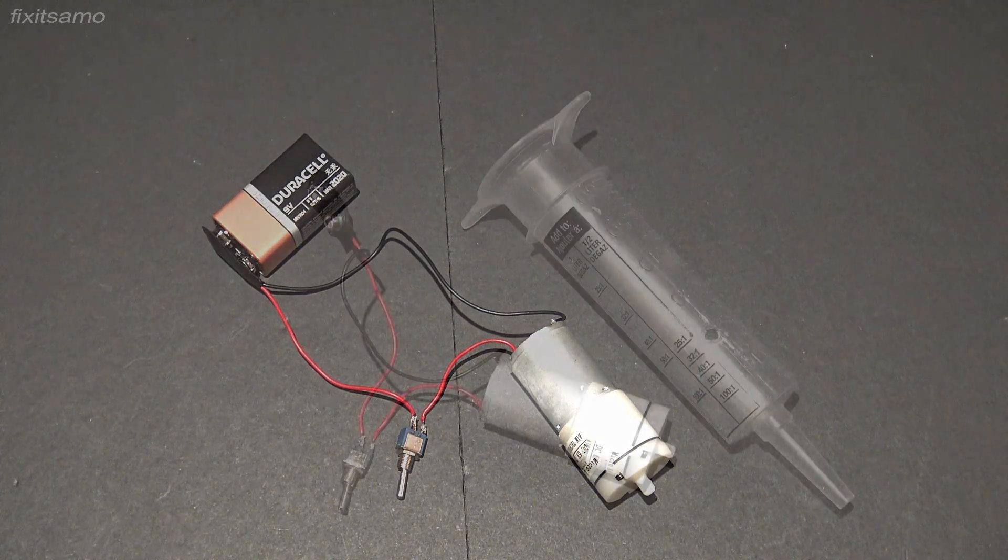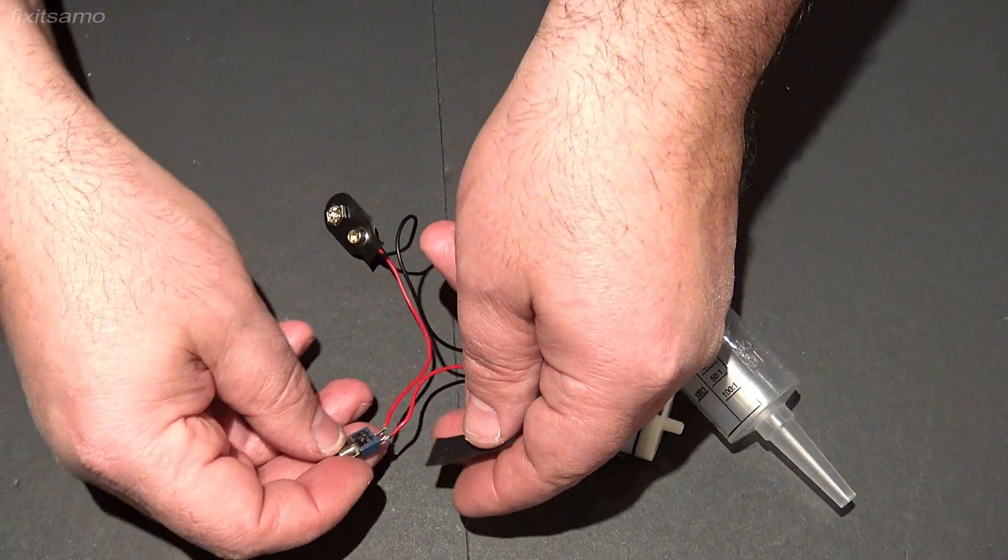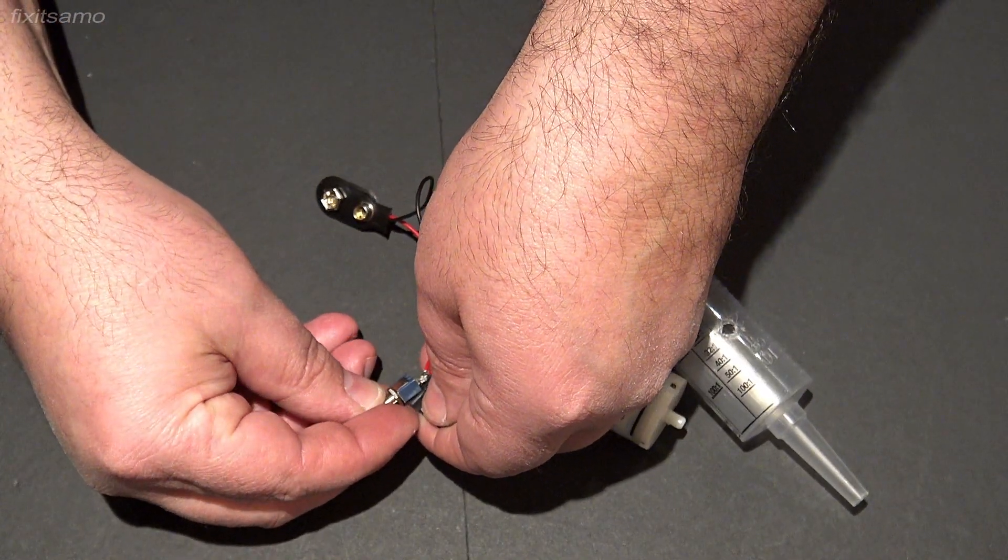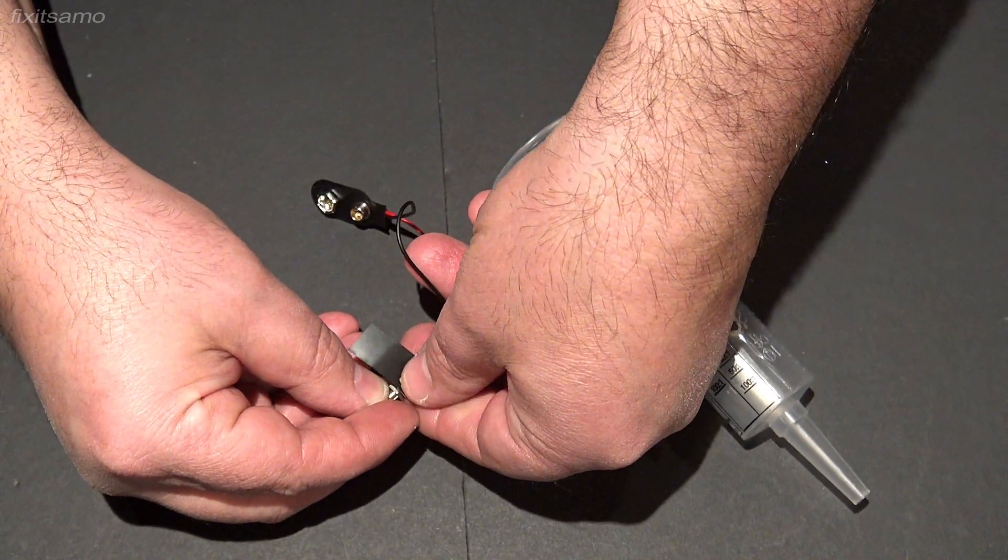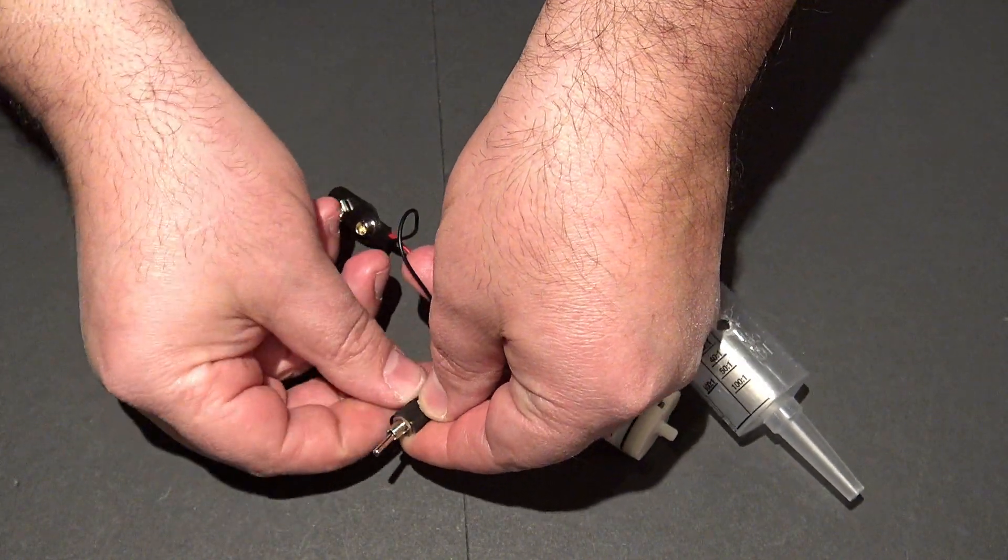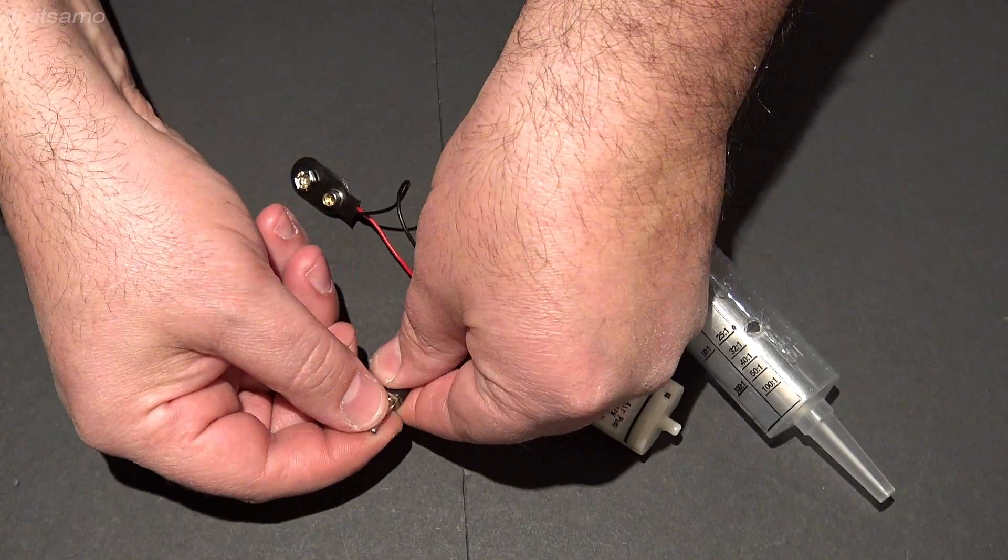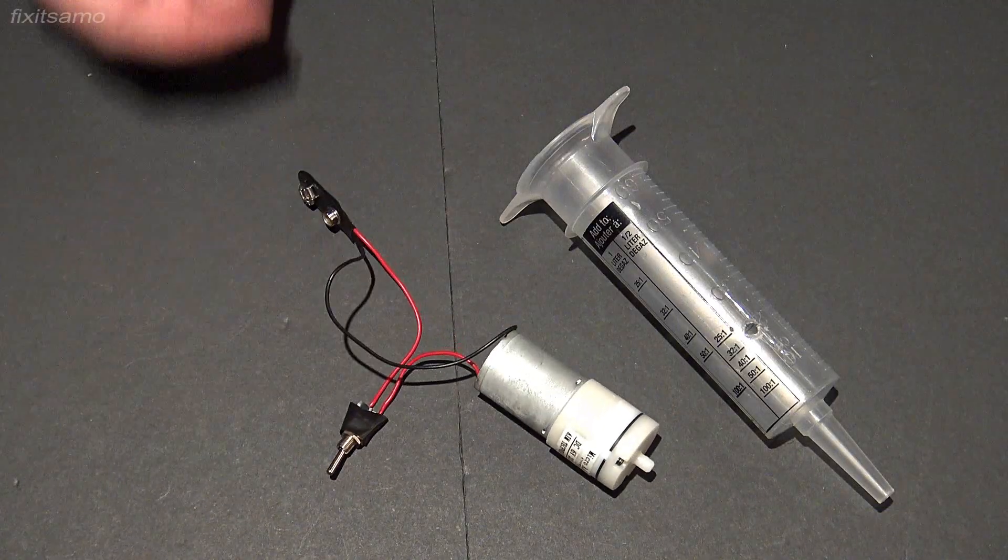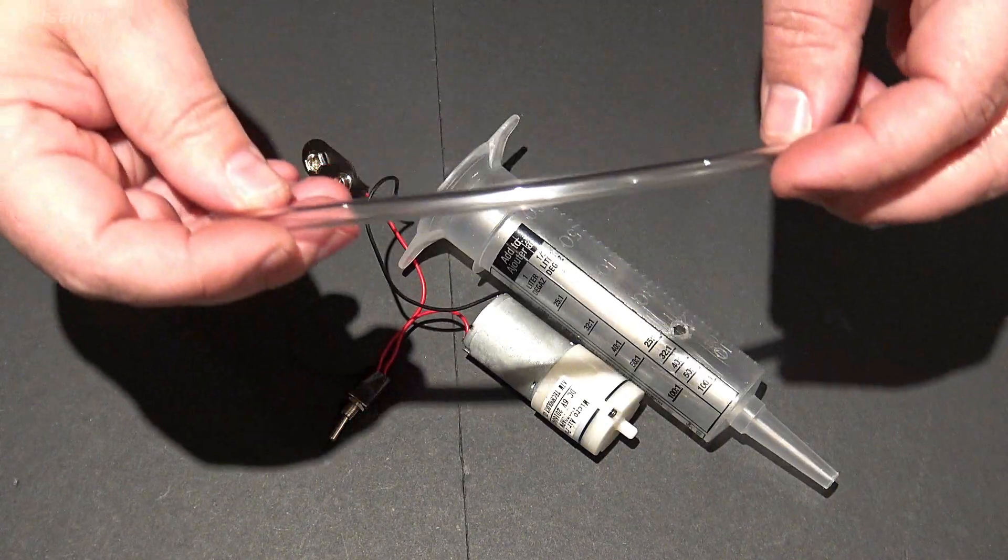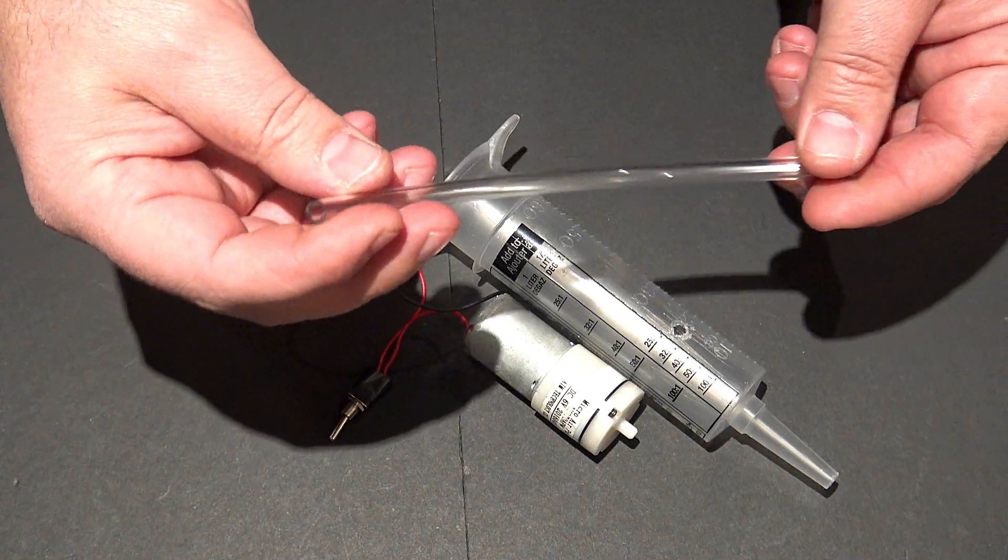Everything is okay and now we're gonna put some electrical tape around our on-off switch because we don't want the wires to touch the battery or the motor. There you go and I have over here the quarter inch plastic tube, I'm gonna cut one inch long.